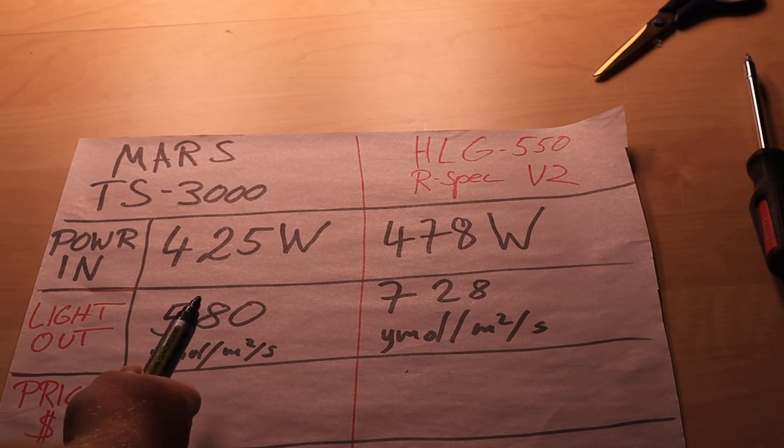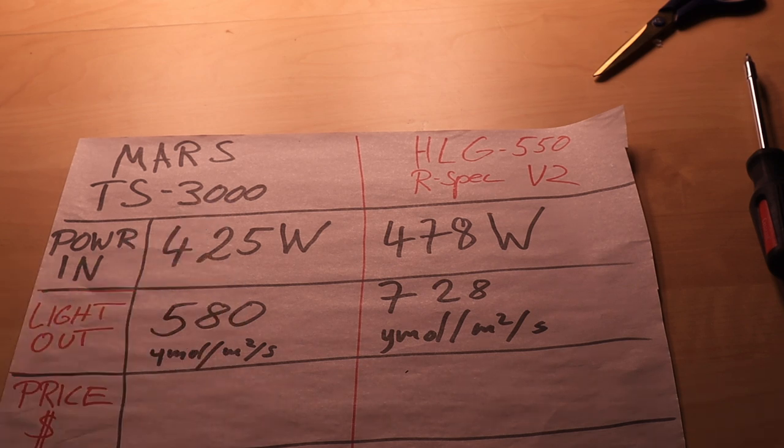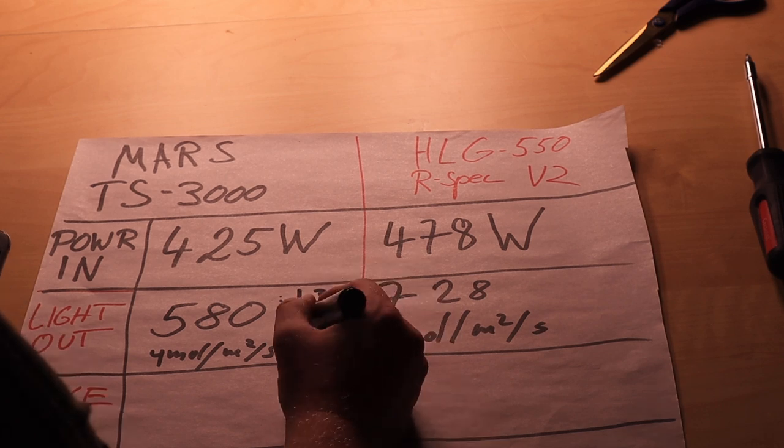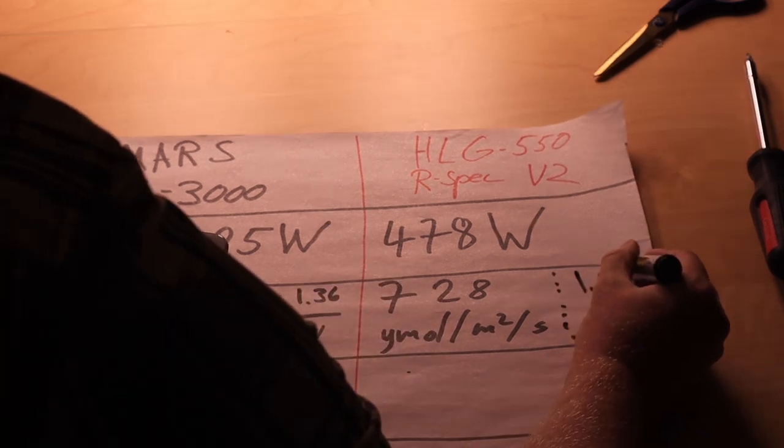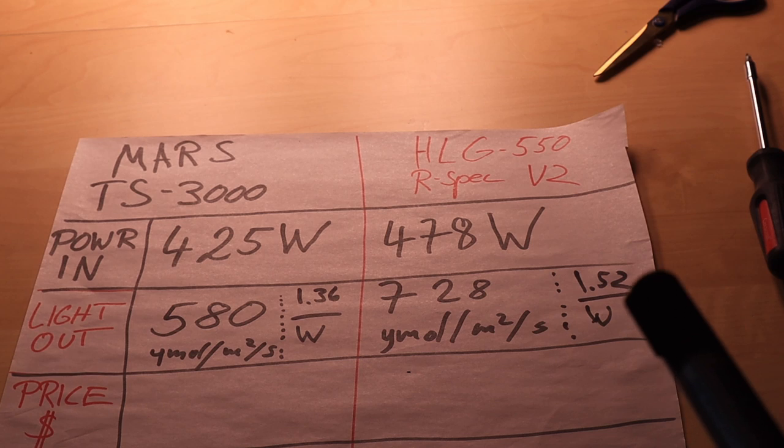How about efficiency? If I divide 580 by 425, 1.36 per watt. 1.52 per watt. The HLG makes more light per watt. It's more efficient.